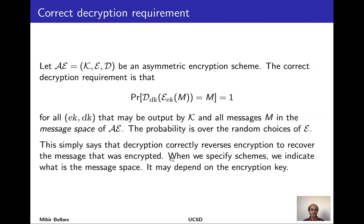The decryption algorithm, which is deterministic, takes the decryption key and ciphertext and produces an output that is either a string or the special symbol ⊥ to indicate failure. As usual, before we consider security we want a basic correctness requirement: decryption reverses encryption. For all possible keys output by key generation and all possible messages, if we encrypt the message to get a ciphertext and decrypt the result, we get back the original message.